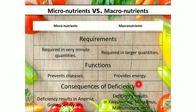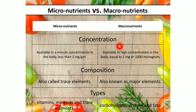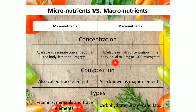On the basis of deficiency consequences, micronutrient deficiency can cause conditions such as anemia, goiter, and scurvy. On the basis of concentration, micronutrients are available in minute concentrations in the body — less than one microgram — while macronutrients are available in higher concentrations, equal to or greater than one thousand micrograms.